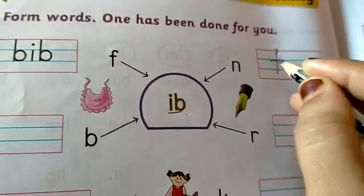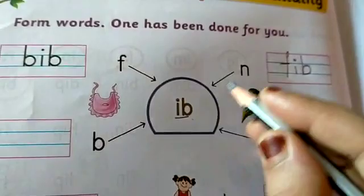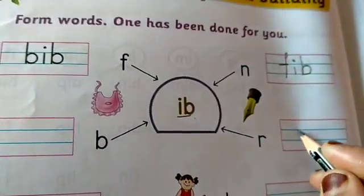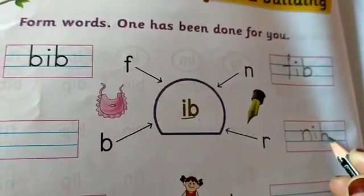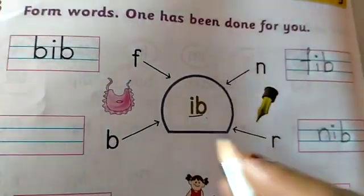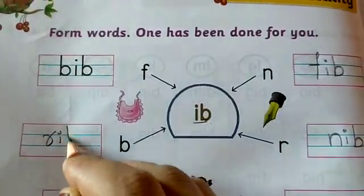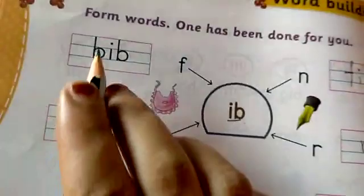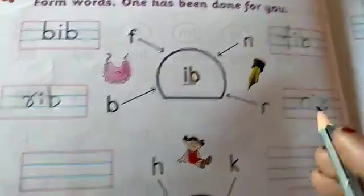Write here. F I b, fib. N I b, nib. Next is, R I b, rib.